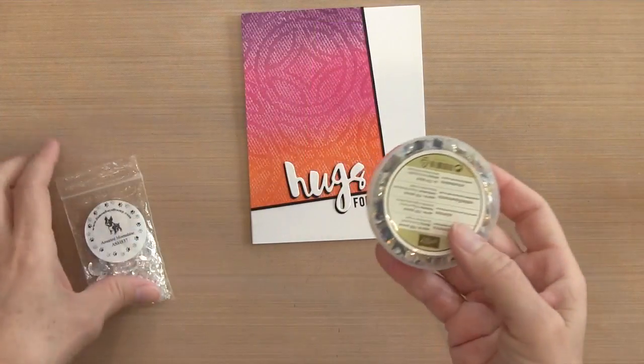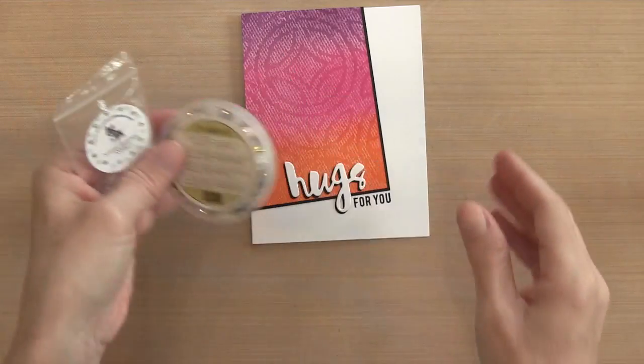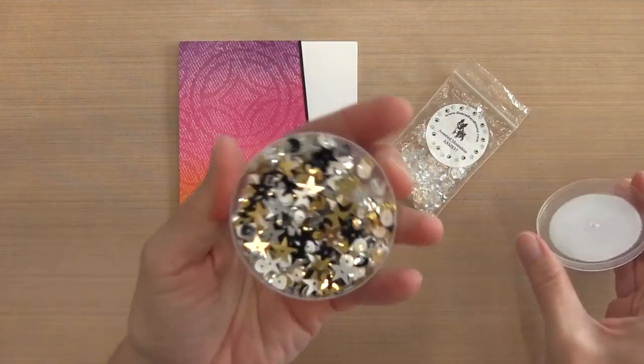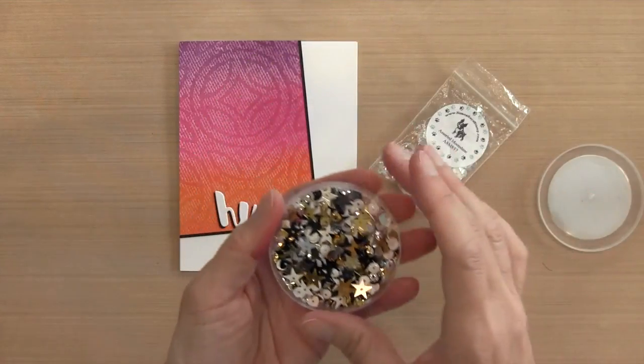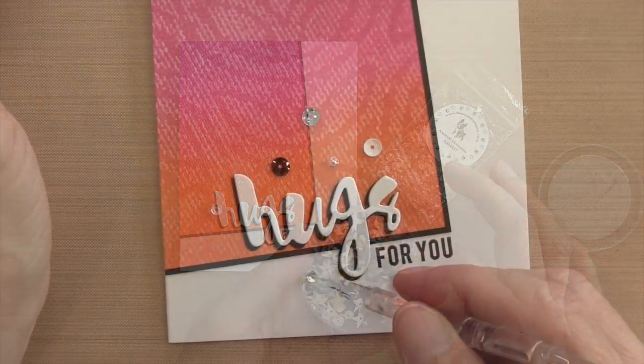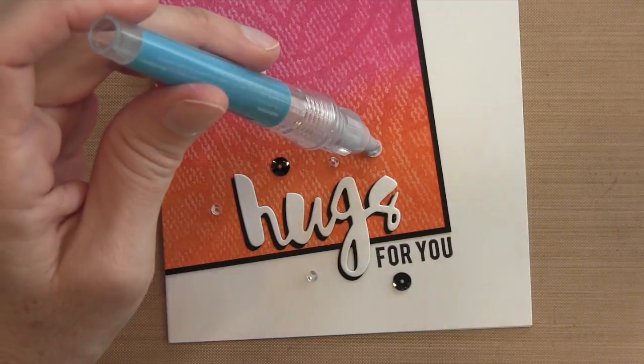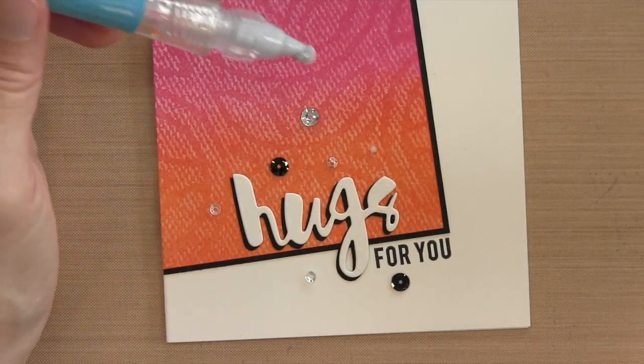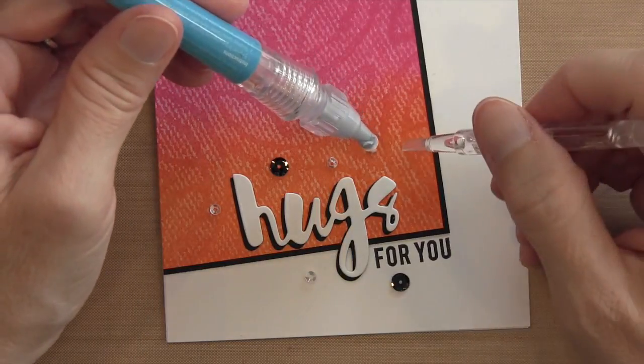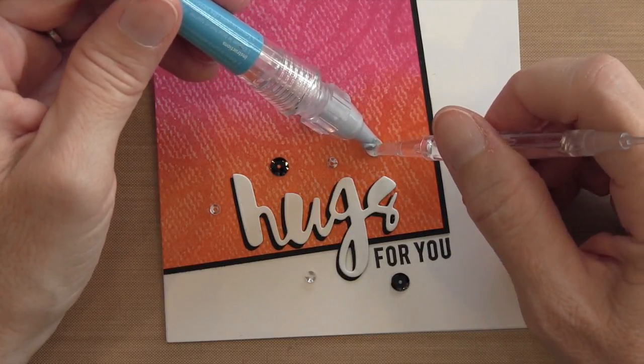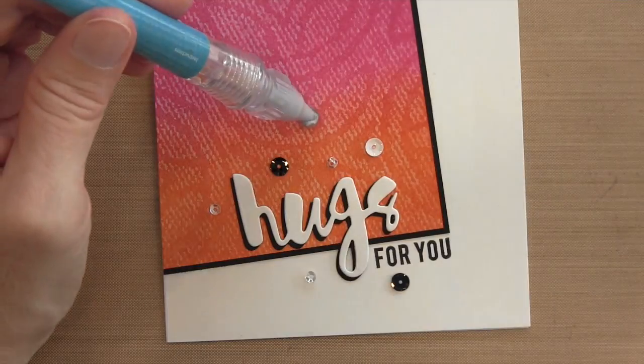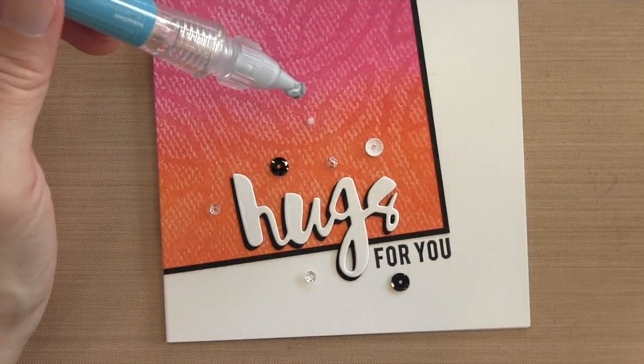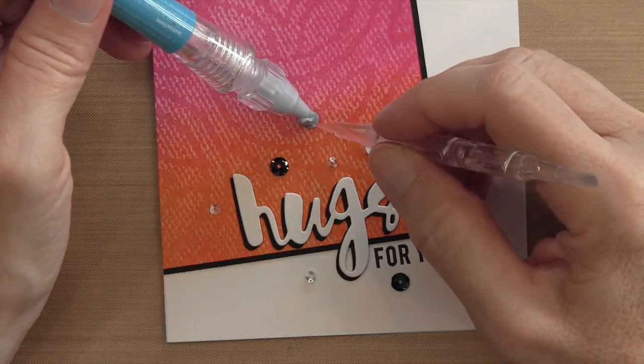And then I decided I wanted to add some bling to it. So I've got my Stampin' Up—these are metallic sequin set, I think—and they're retiring, which is really sad because it has black, clear, white, gold, and silver, and circles and stars and hearts. So anyway, I arranged those along with some Simon Says Stamp Moonshine, which is a little bit smaller. So what I like to do is use my pick-me-up stick to pick it up, and then I just put some multi-medium matte right under there.